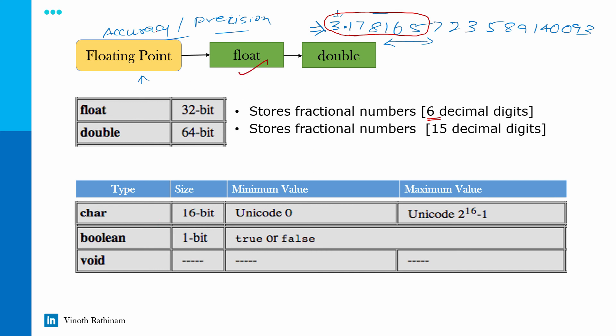So I want to consider this number for the calculation. Then I can choose float data type. I want my accuracy to be even higher for some scientific calculation purpose. Then I can go for 15 digit. So it's like 3 point after decimal point, it will consider 15 decimal digits for the calculation purpose.